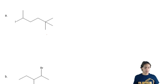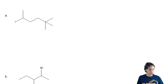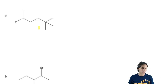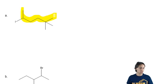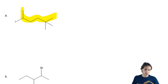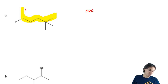All right guys, so this one was actually similar to one that we did earlier where it kind of looked like a tert-butyl but it wasn't. My longest chain would look like that — six carbons: one, two, three, four, five, six. So my root is going to be hexane.